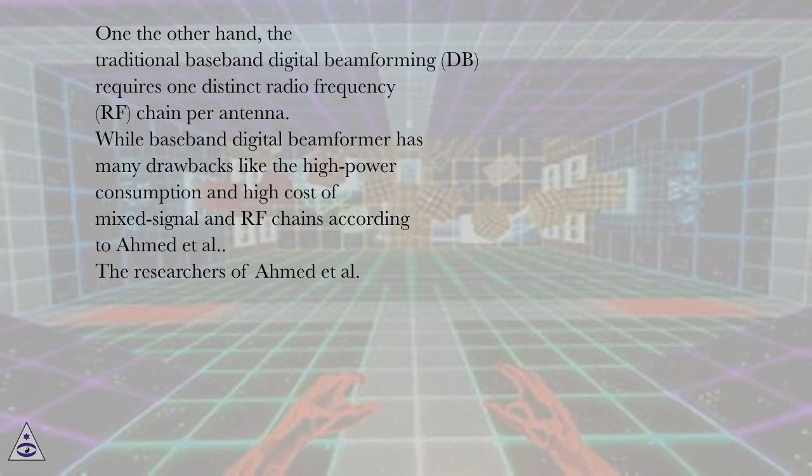On the other hand, the traditional baseband digital beamforming (DB) requires one distinct radio frequency (RF) chain per antenna. While baseband digital beamformer has many drawbacks like the high power consumption and high cost of mixed signal in RF chains according to Ahmed et al.